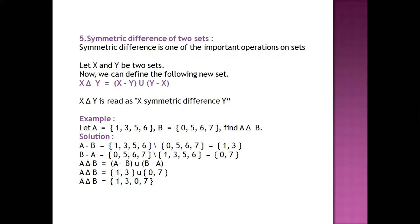The last operation is the symmetric difference of two sets. Symmetric difference is calculated using the formula denoted by delta (Δ). Delta is read as X symmetric difference Y. Its formula is: X Δ Y = (X minus Y) union (Y minus X).